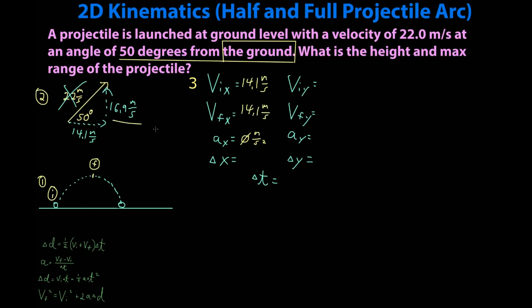VIY, I have VIY right here, it is 16.9 meters per second. Acceleration on the y-axis I know. It is negative 9.8 meters per second squared because this object is in freefall. I don't know delta y. It's actually what I'm looking for, the height.